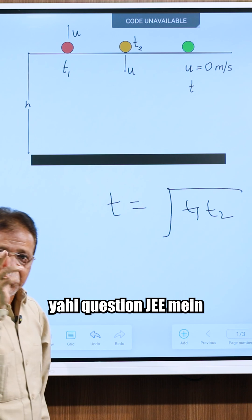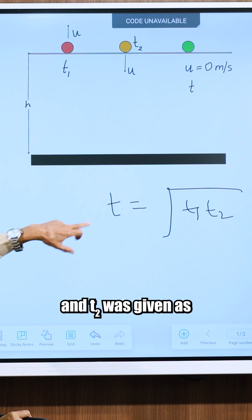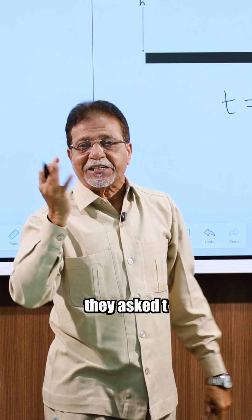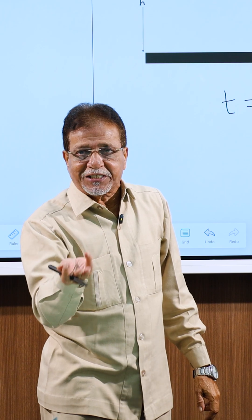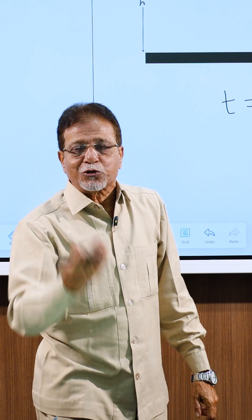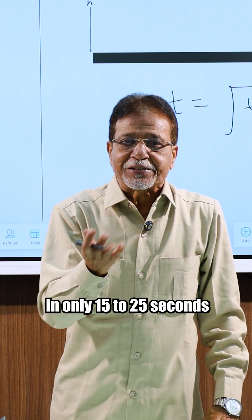Yehi question JEE mein puchha gaya tha. Usmei T1 was given as 9 seconds and T2 was given as 4 seconds and they asked T. And answer was T is equal to root of 9 into 4 that is 36 and root of 36 is 6 so answer was only 6 seconds. You will get the four marks in only 15 to 20 seconds.